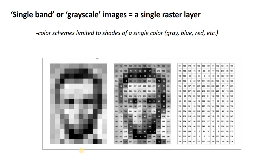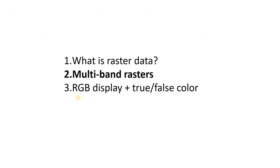When we say single band or grayscale image, we mean we are adding tone to a single raster layer. Here the digital numbers each correspond to a shade or tone of gray, and when we display that we see a face. Importantly, a single band or grayscale image can also be shaded in tones of other colors — it could be tones of blue or tones of red — so it doesn't have to just be gray.